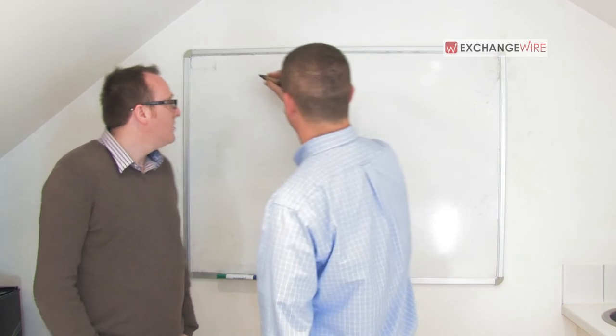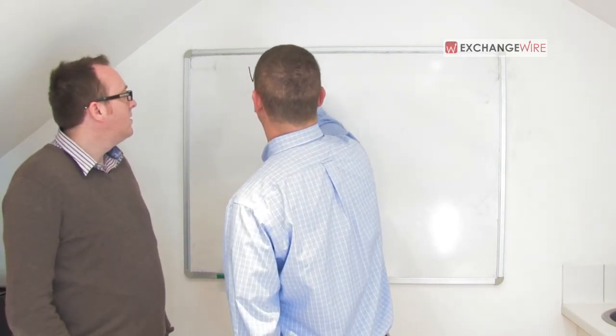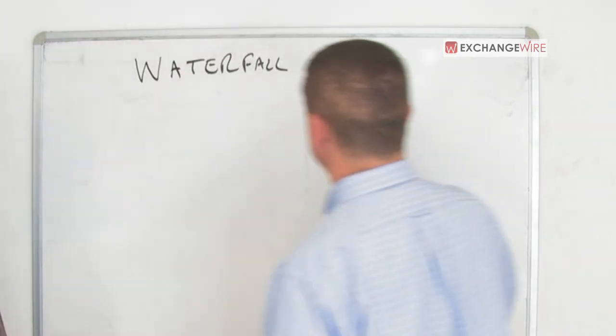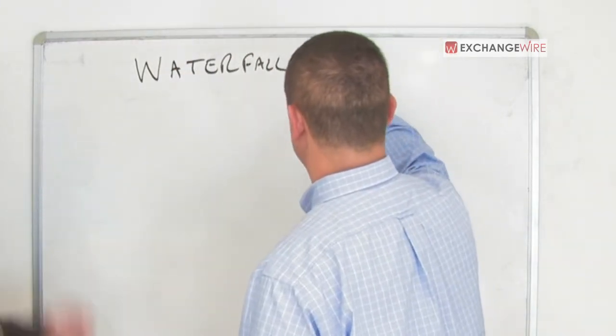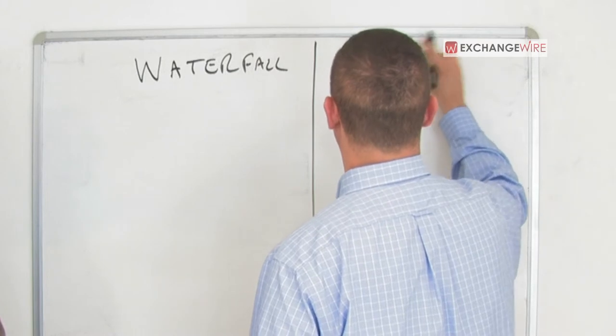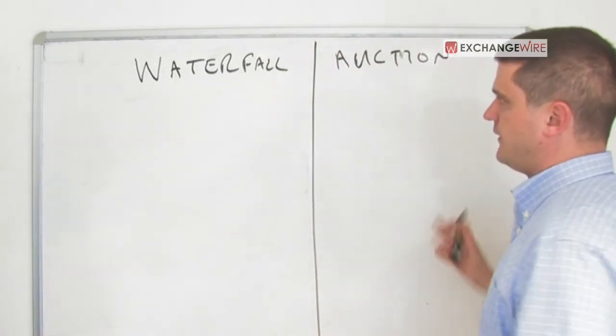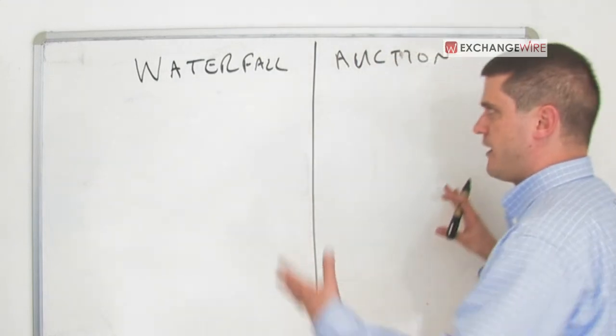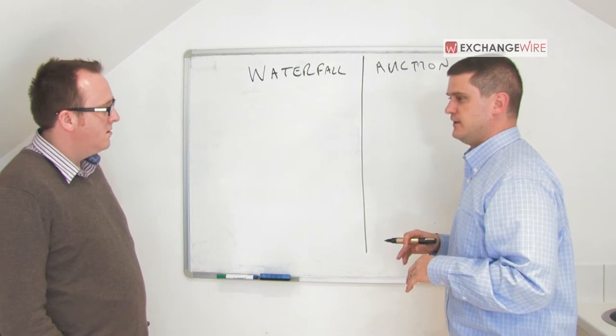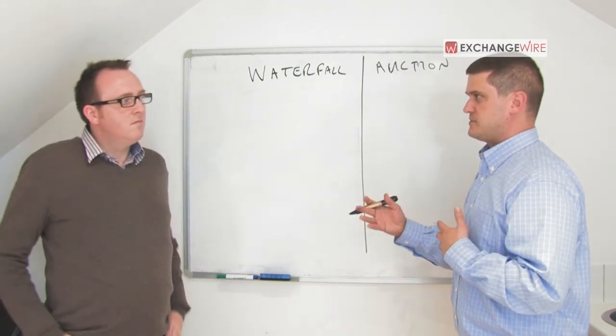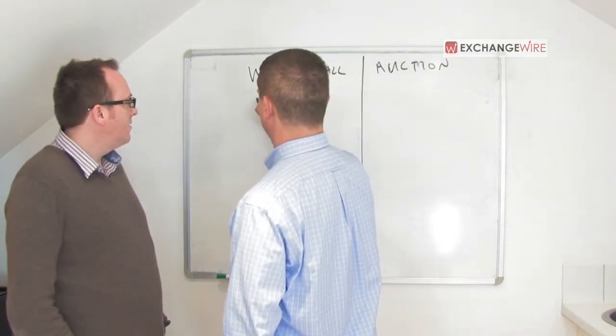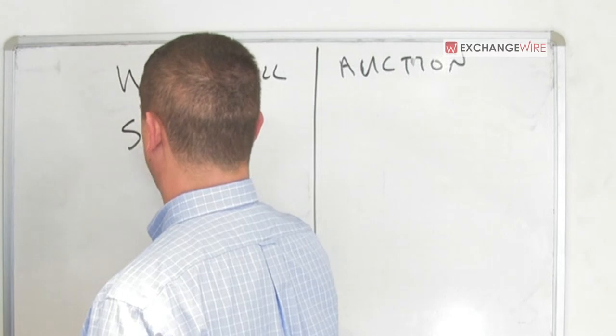Sure. Ad serving today has its legacy in what you would call a waterfall, and RTB has created this essentially new way of looking at things that is based on an auction. So we have a bit of a conflict. These are, you know, an economist would call these mechanisms of how you sell something. A mechanism is just how will you take an object and what is your methodology to sell it.